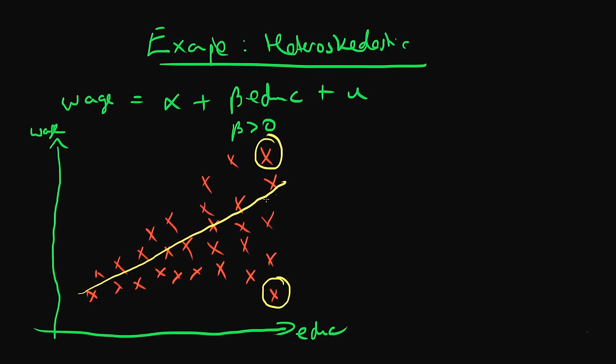So perhaps the slope of this line is unbiased. But note that the distance of points from the line, on average, is increasing along with my education variable, along with my independent variable. So in this circumstance, we have the case of heteroscedasticity.